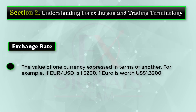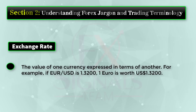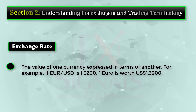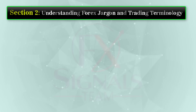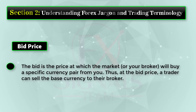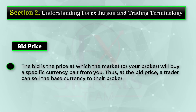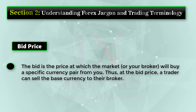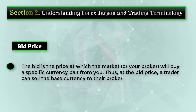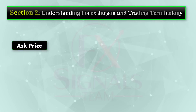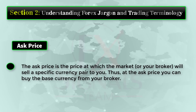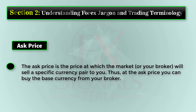Exchange rate: the value of one currency expressed in terms of another. For example, if EUR/USD is 1.3200, one euro is worth 1.3200 US dollars. Bid price: the bid is the price at which the market will buy a specific currency pair from you — at the bid price, a trader can sell the base currency to their broker. Ask price: the price at which the market or your broker will sell a specific currency pair to you — at the ask price, you can buy the base currency from your broker.